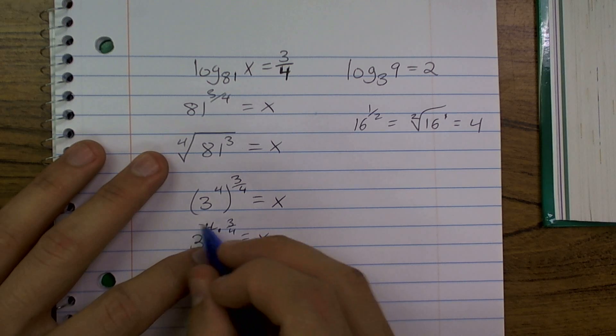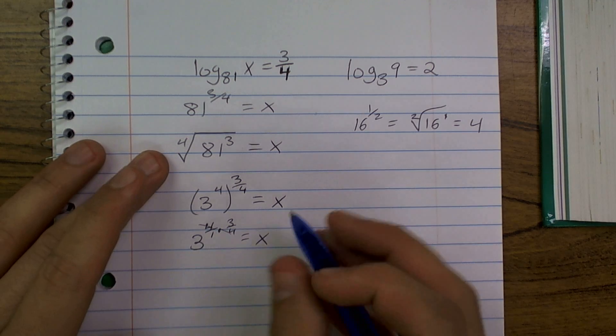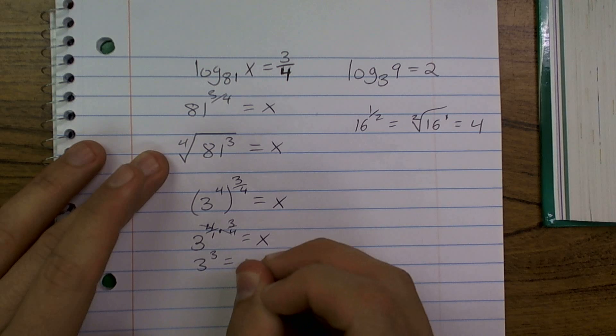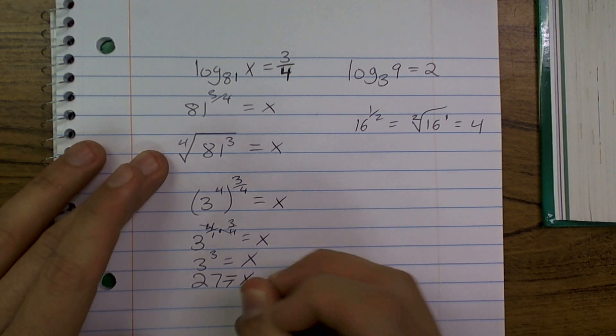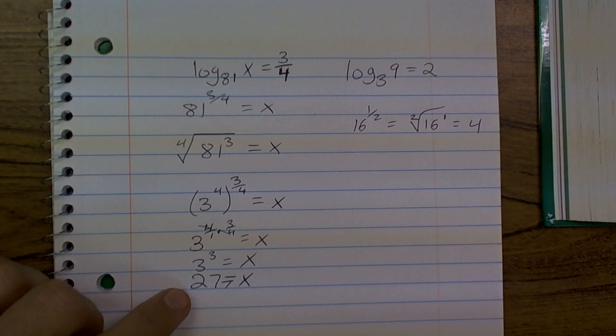4 over 1 times 3 fourths, the fours cancel out, so you end up getting 3 cubed equals x. So 27 equals x, and there you go. That's how you get your answer.